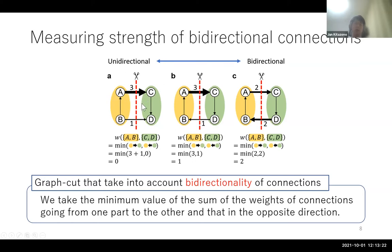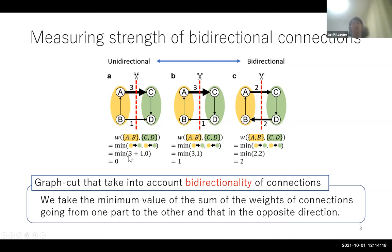Let us consider a simple network consisting of four nodes. We want to measure the strength of bidirectional connections between {A, B} and {C, D}. To do so, we take the minimum of the sum of weights in one direction and the opposite direction. In this case, there are connections from A,B to C,D with weights three and one, so the connection strength from A,B to C,D is four. But there's no connection from C,D to A,B, so that strength equals zero. By taking the minimum of four and zero, the strength of bidirectional connection between A,B and C,D equals zero.